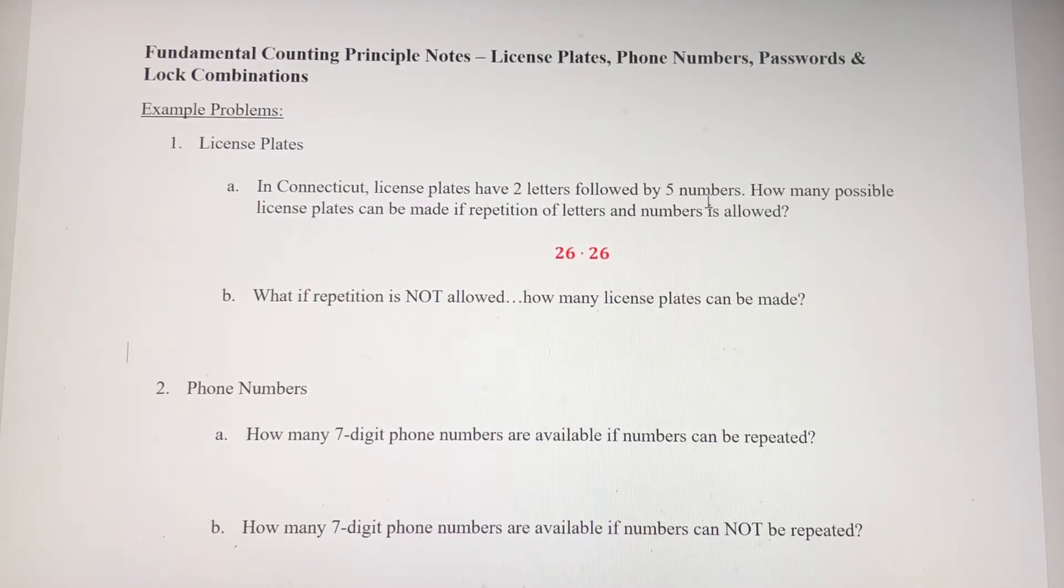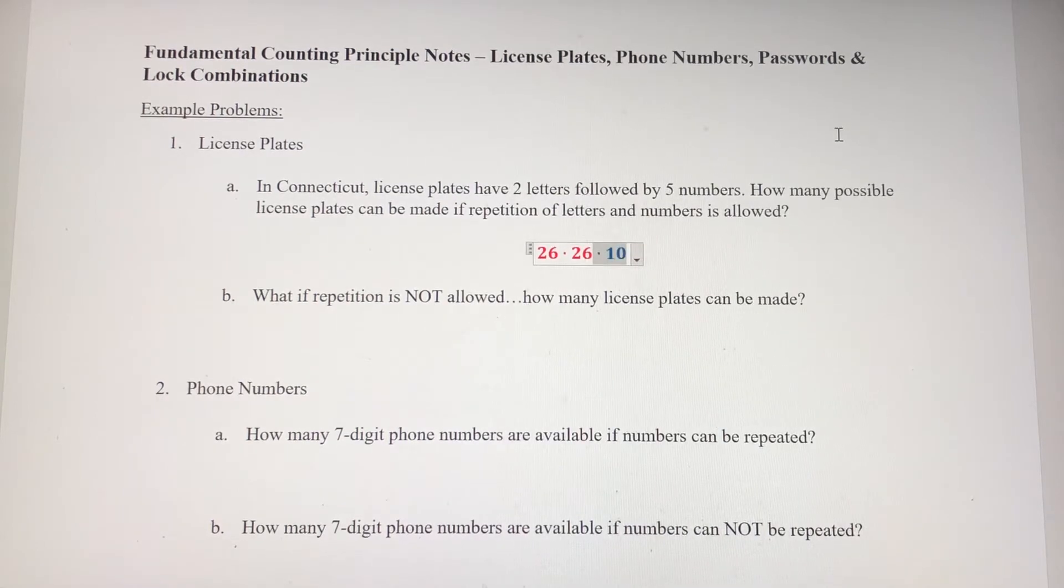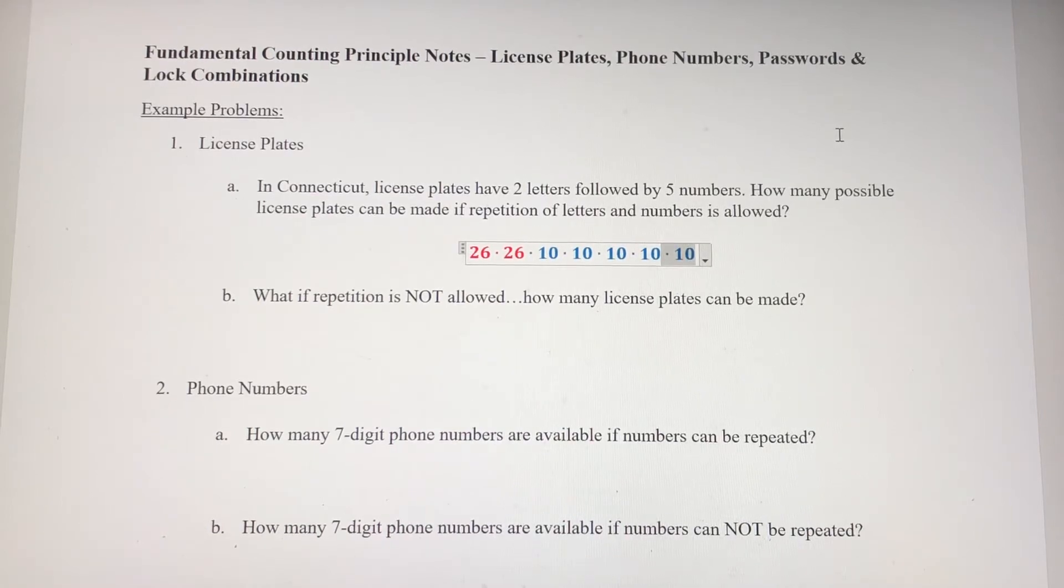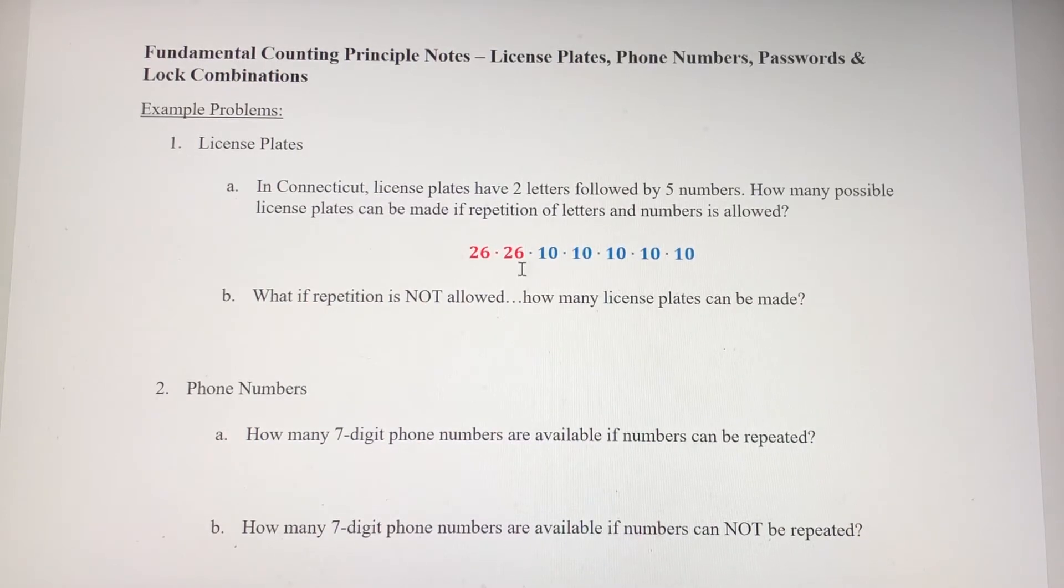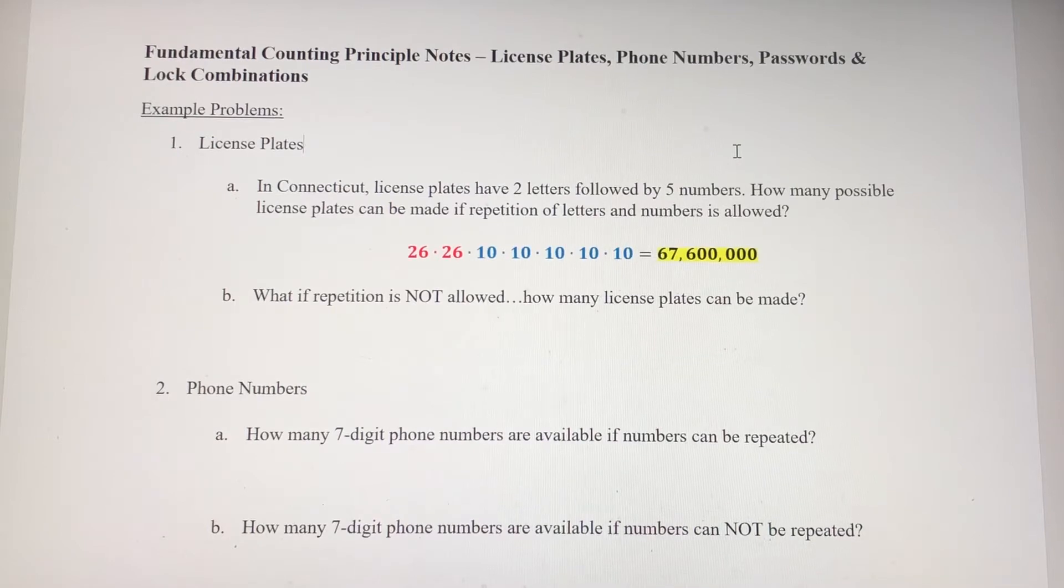Now the five numbers that follow, well our possibilities are from zero to nine, so there's ten possibilities for each of those five numbers. Numbers can be repeated, so then I'm going to have ten options in each of those locations. So the number of possible license plates in Connecticut with this format is going to be 26 times 26 and then times 10 to the fifth power here. So there's a possible 67,600,000 license plates there.